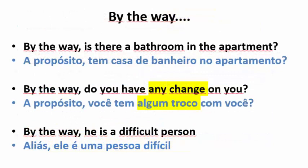Sentence Structure Number 7: By the way. Examples: 1. By the way, is there a bathroom in the apartment? 2. By the way, do you have any change on you? 3. By the way, he is a difficult person.